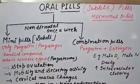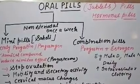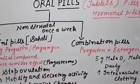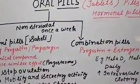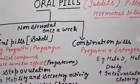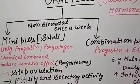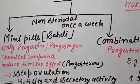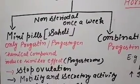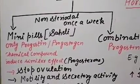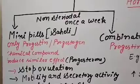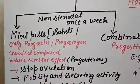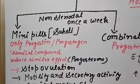Hello students, today we are going to discuss the topic oral pills, or we can say tablets, pills, or hormone pills. They are called oral pills because they are taken in the form of tablets or medicine. Oral pills are a method of contraception and are taken as an oral method.